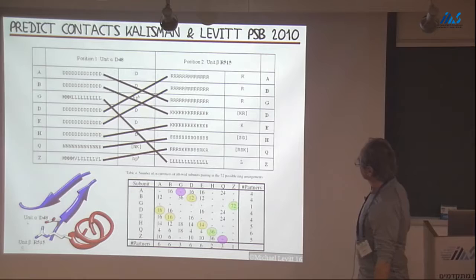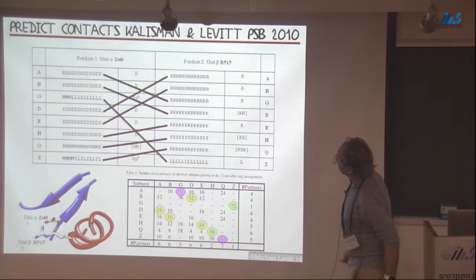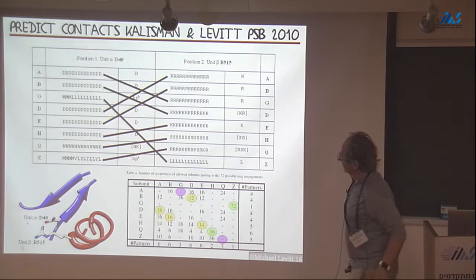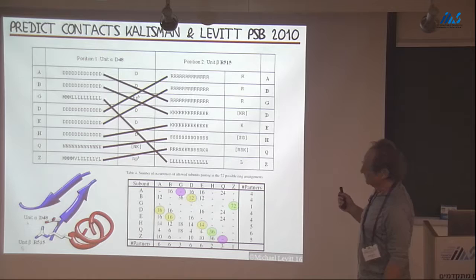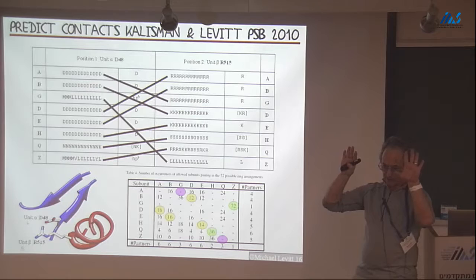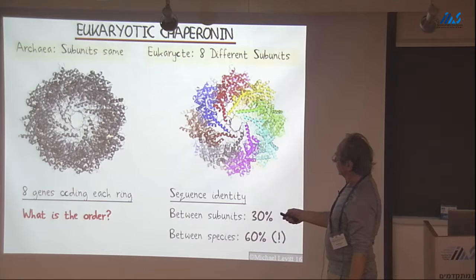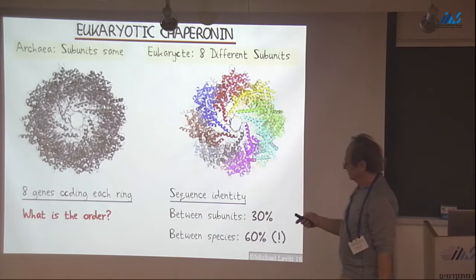Nir came to my lab, and one of the first pieces of work he did was to take the sequences - at that time about 12 or 14 sequences - and look for correlated mutations between the sequences. He put the sequences into the gray structural framework and looked for correlations between subunits placed next to each other. He concluded there were correlations, and the one he felt strongest about was that subunits Z and G are close together.